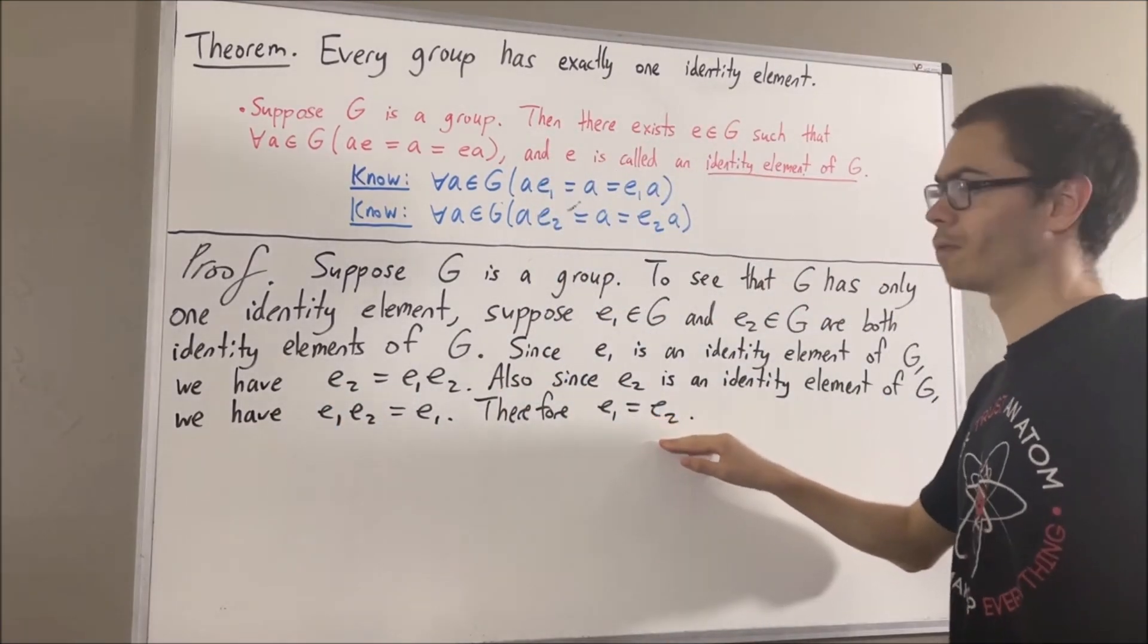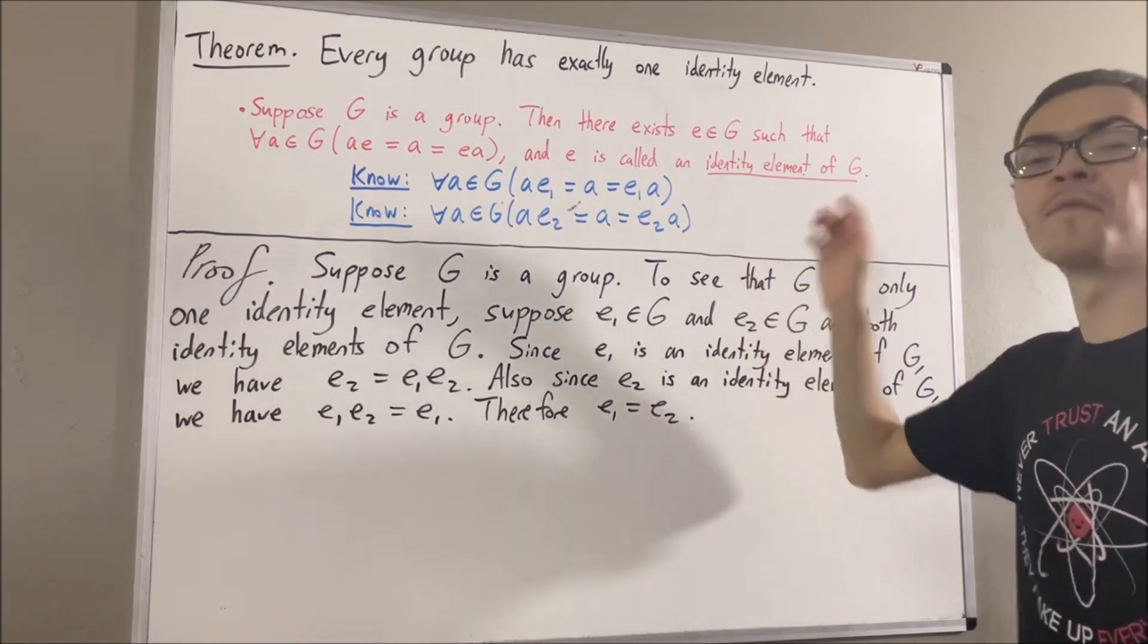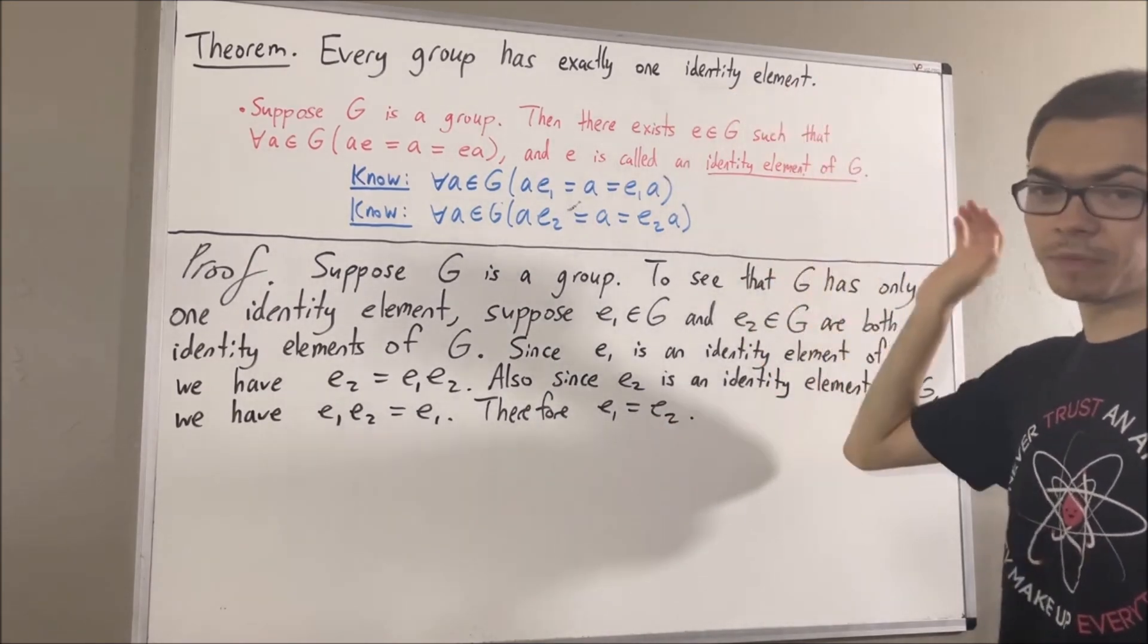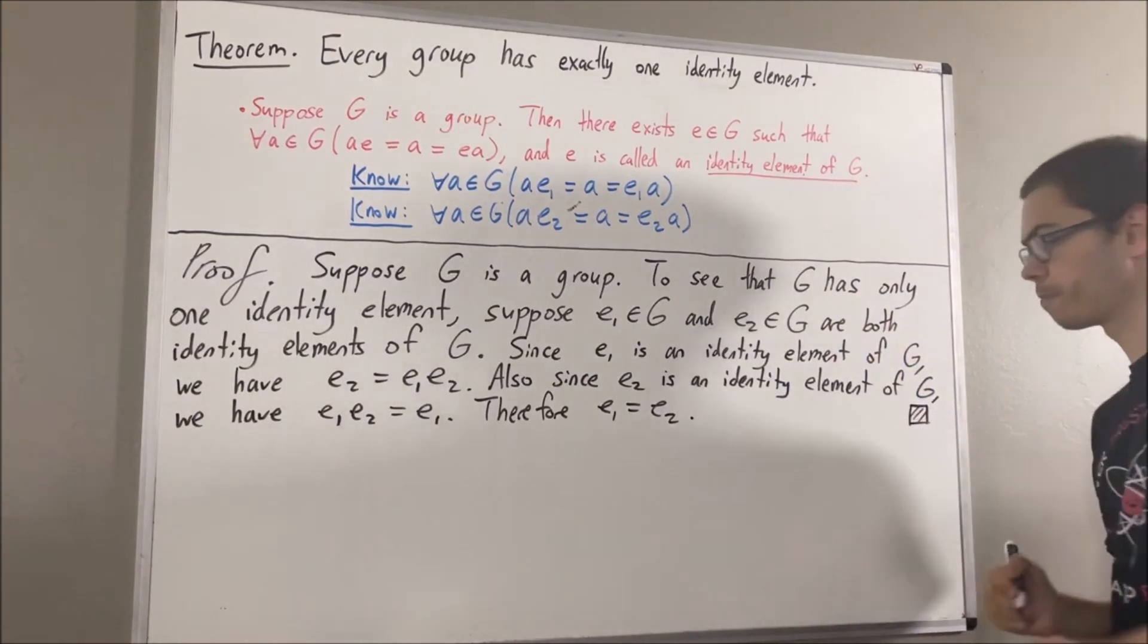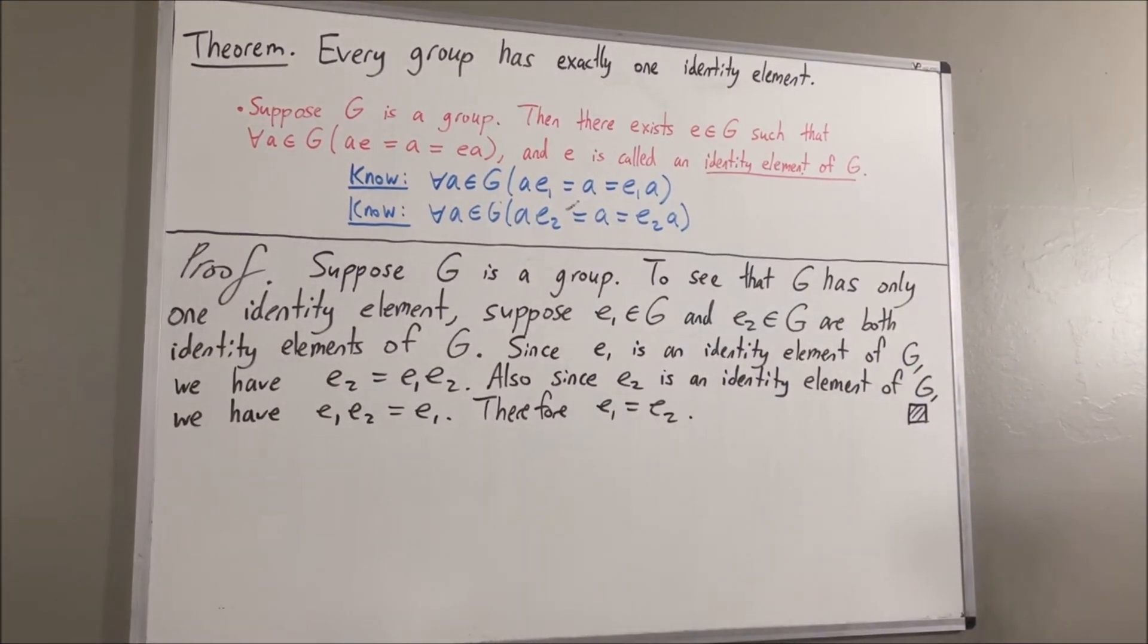And this was our goal. So G can only have one identity element. And so this completes the proof. And that's pretty much it for this video.